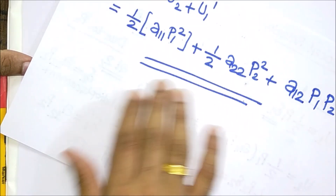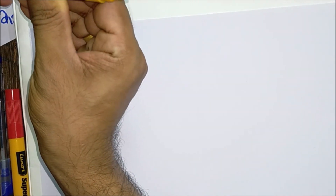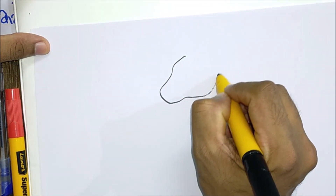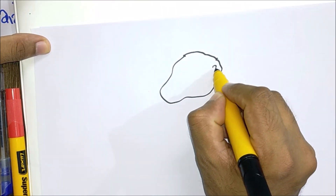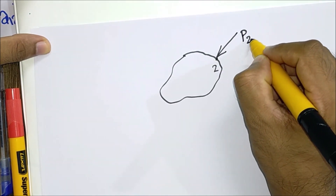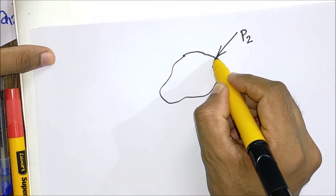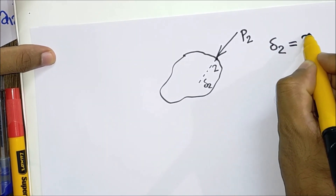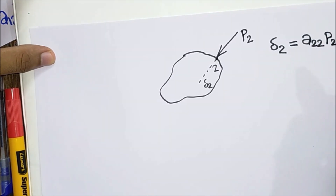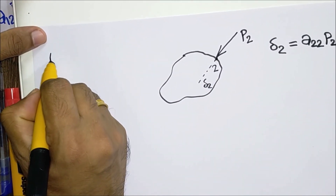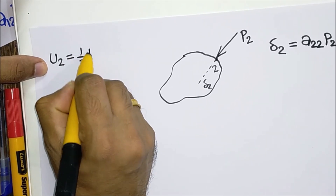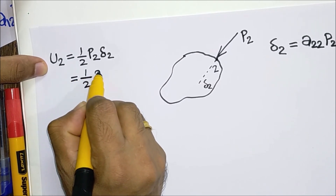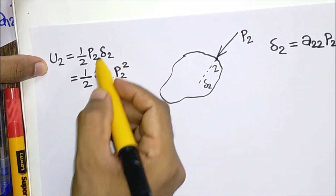The proof is not yet complete. We are considering the same system with the same points, but now we apply the loads in reverse order. Now P2 will produce a displacement delta 2. By definition of the influence coefficient, delta 2 can be written as a22 P2. This will produce a strain energy U2, which can be written as half into P2 delta 2, and that equals half A22 P2 squared. This is equation number 4.